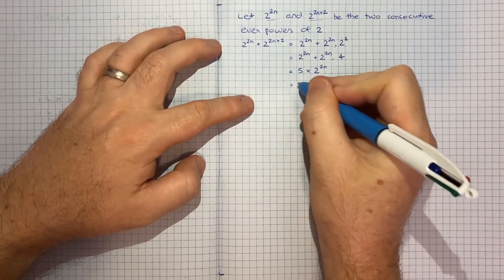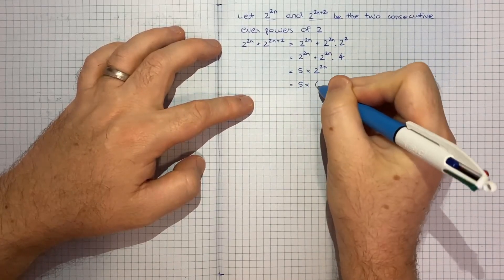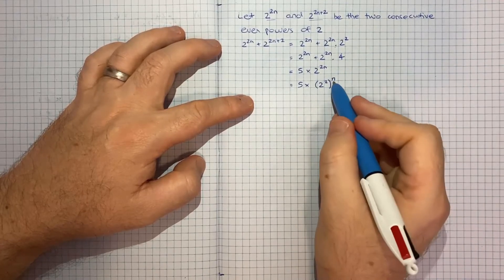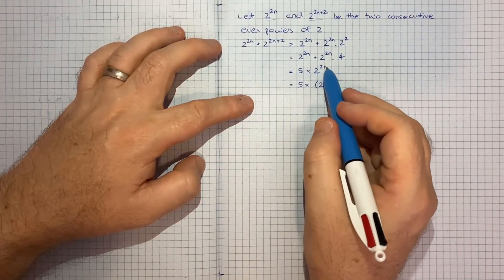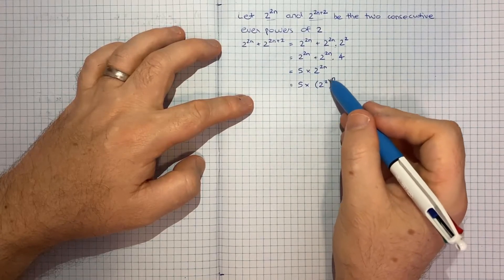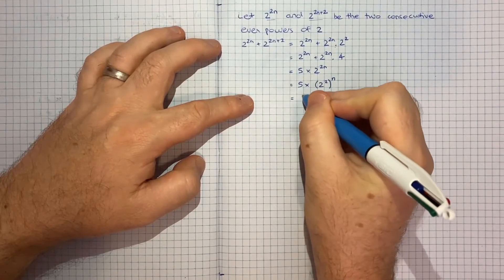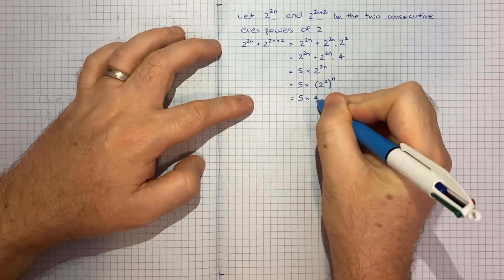And this I can write as 5 times 2 to the 2 to the power of n. Since when you've got 2n here I would be multiplying these exponents if I have one to the power of the other. So that's going to be 5 times 4 to the power of n.